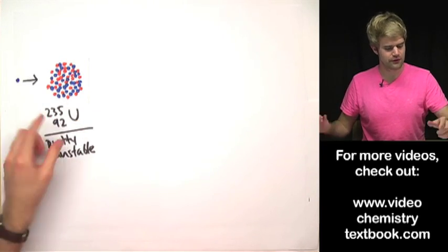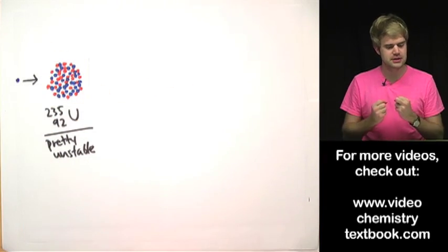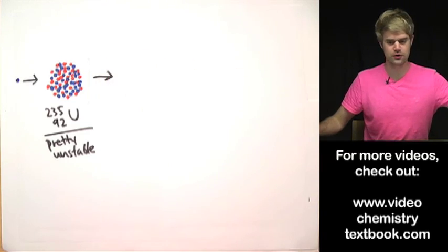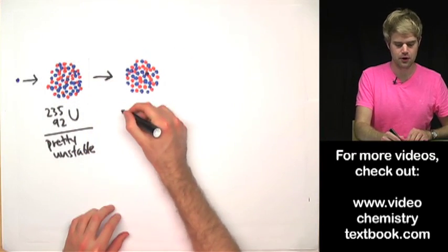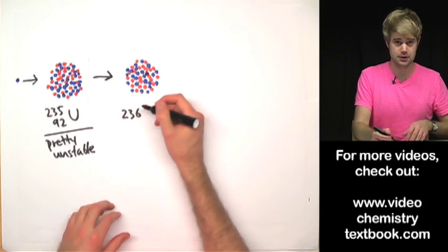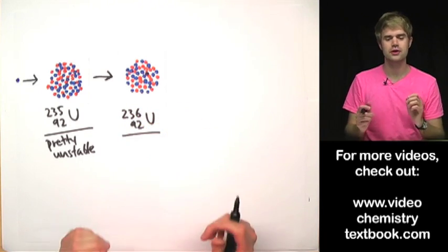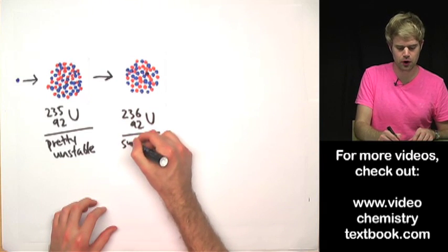This uranium-235 atom gets this neutron and holds onto it which turns it into uranium-236 because it has one more neutron. Uranium-236 is super unstable.